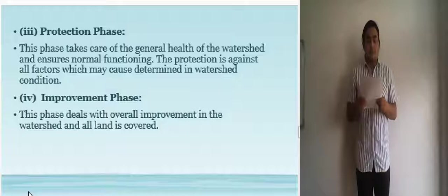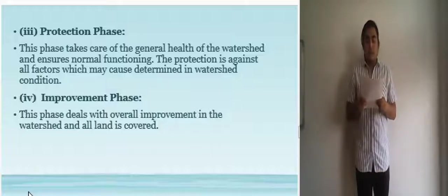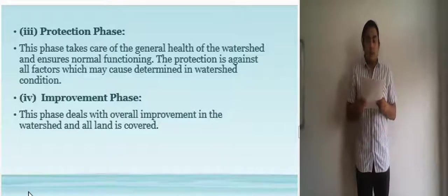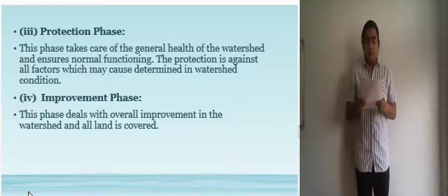And the last phase is the improvement phase. This phase deals with overall improvement in the watershed and all land that is covered. Attention is paid to agriculture and forest management and production, forage production and pasture management, socio-economic conditions to achieve the best objectives of the watershed management.